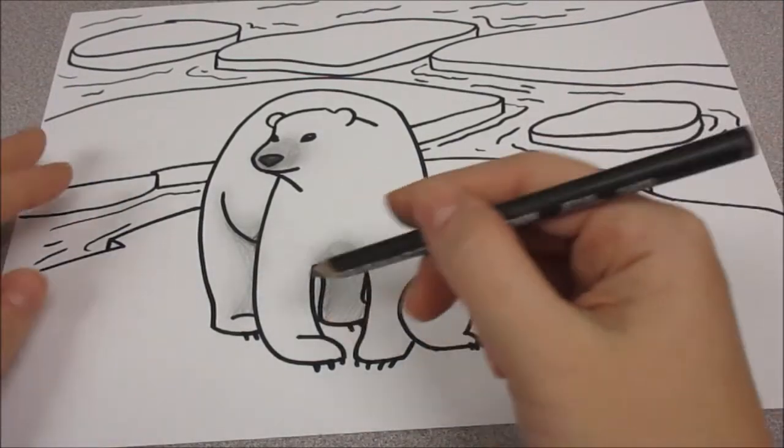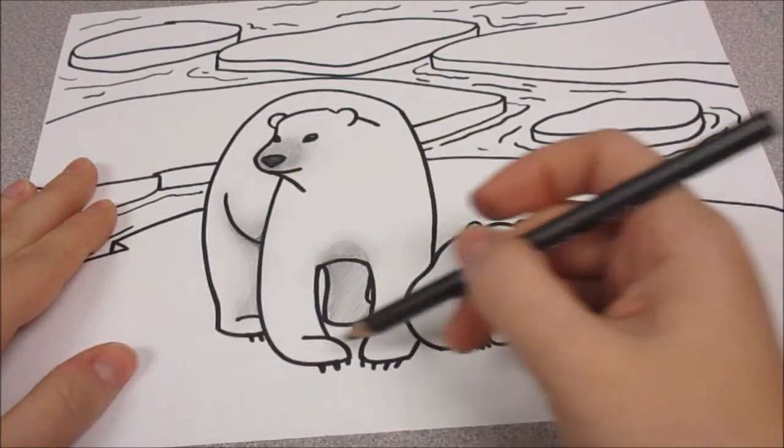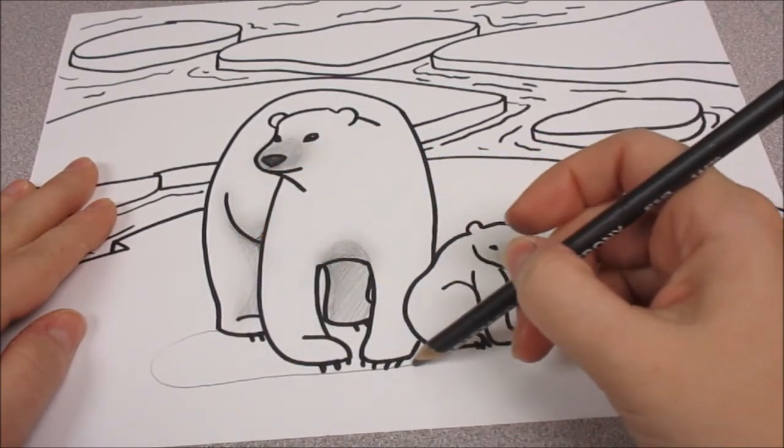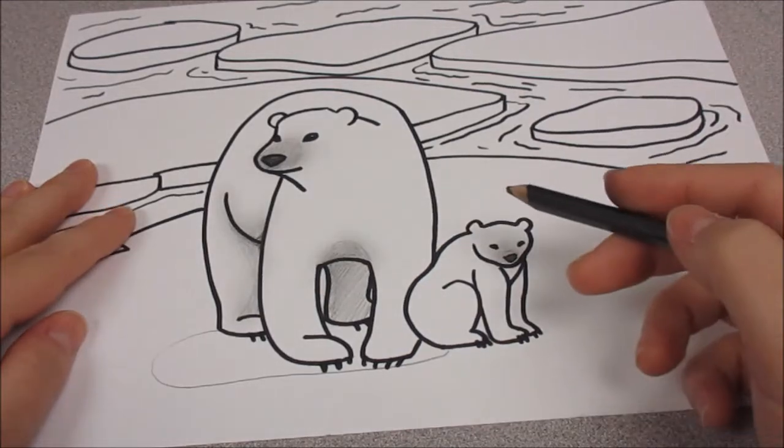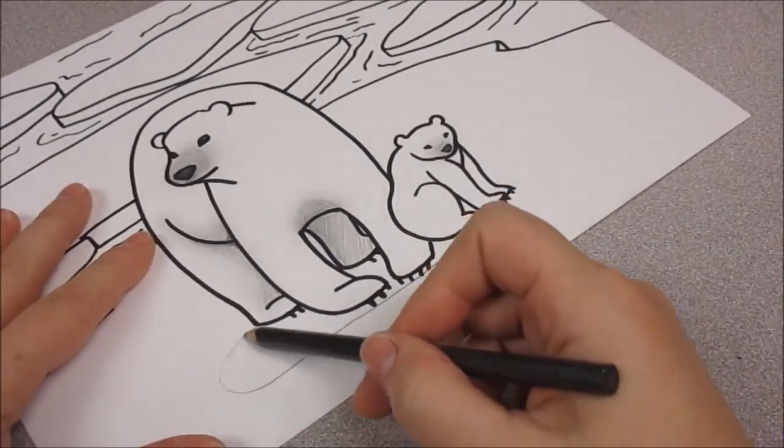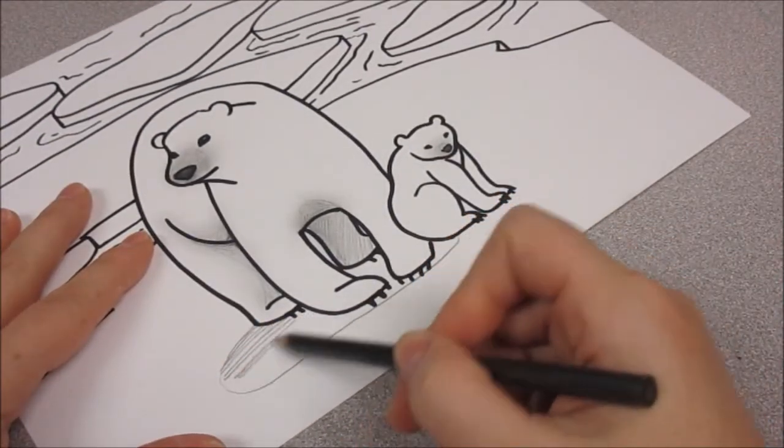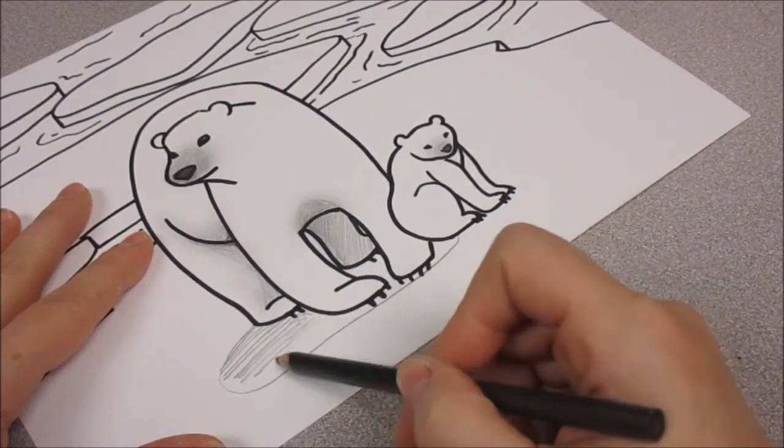Okay. Now, we're going to make sort of an oval leading from his foot to the other bear. And then all that's going to be shaded in because that's the shadow he's casting on the ice that he's standing on.